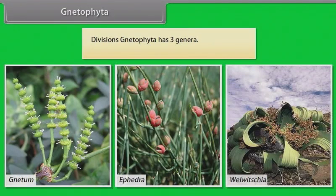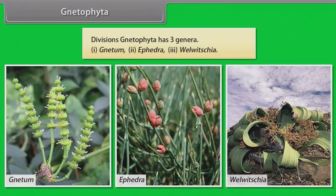Division Gnetophyta has three genera: Gnetum, Ephedra, and Welwitschia.